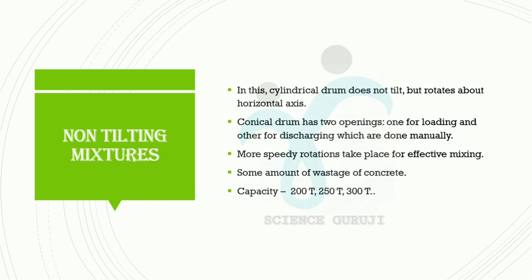In the non-tilting type, a cylindrical drum does not tilt but rotates about a horizontal axis. The drum has two openings — one for loading and one for discharging — which are done manually. More speedy rotations take place for effective mixing. There is some amount of wastage of concrete. Capacity is 200T, 250T, and 300T.